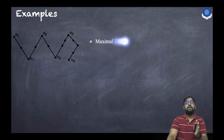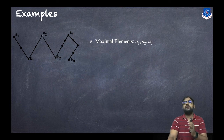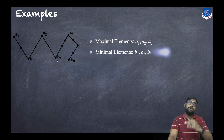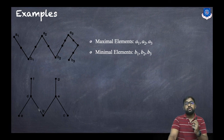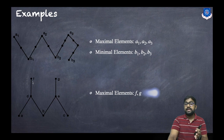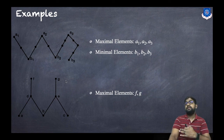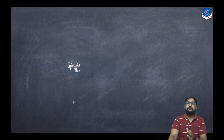Let us look at examples. In the first diagram, the elements on top — a1, a2, and a3 — are the maximal elements, and the elements at the bottom — b1, b2, and b3 — are the minimal elements. In the second Hasse diagram, the vertices at the top are f and g, so they are the maximal elements, and a, b, and c at the lower part are the minimal elements.